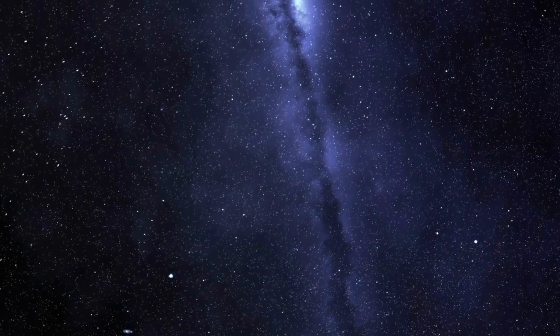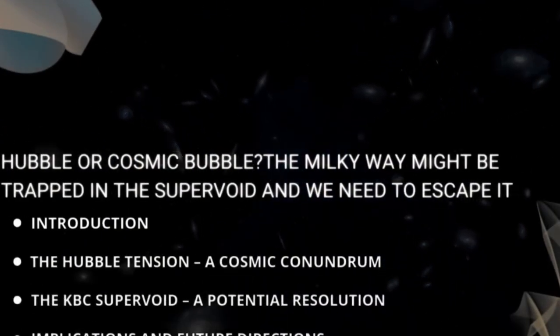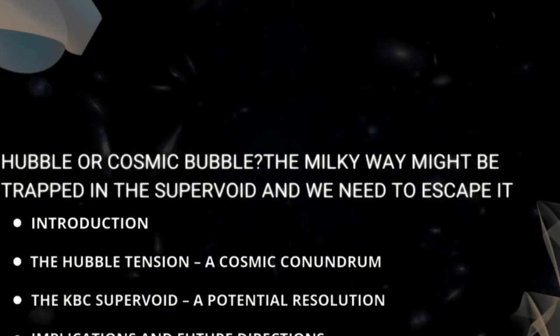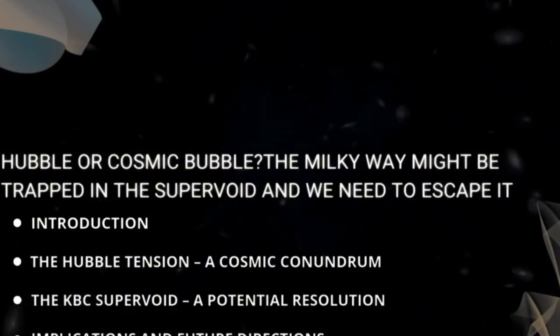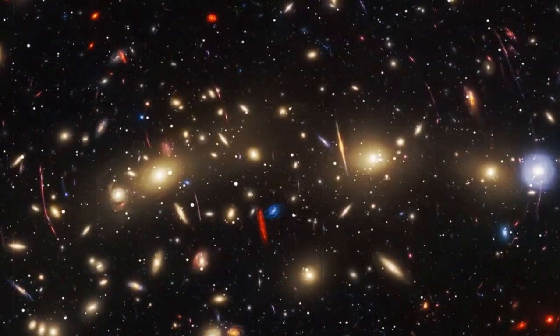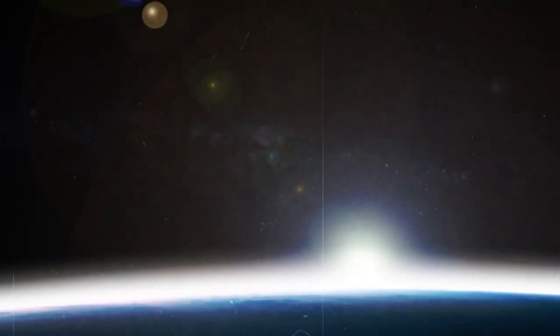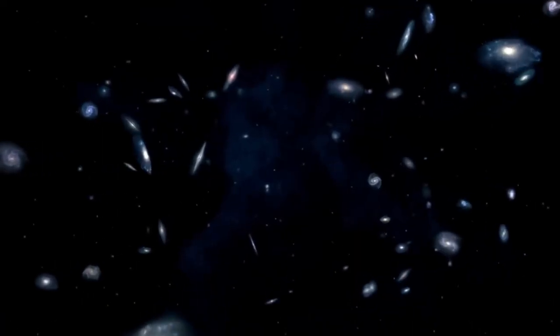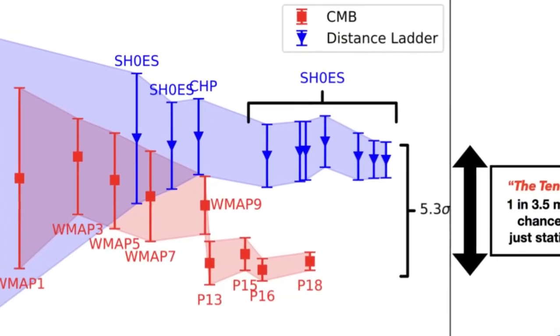This colossal cosmic hole could be skewing our measurements of the universe's expansion and might hold the key to resolving this long-standing cosmic mystery. The Hubble Tension is a significant puzzle in modern cosmology, arising from conflicting measurements of the Hubble Constant, which quantifies the universe's expansion rate. This constant is determined using two primary methods, each yielding different results.